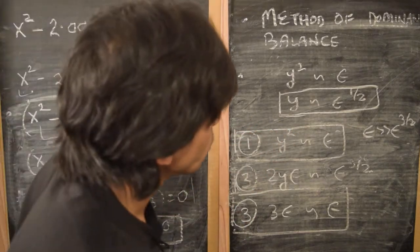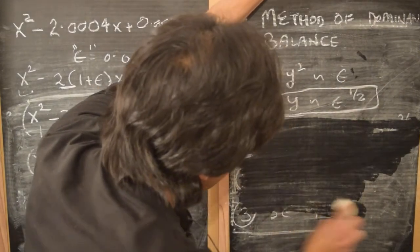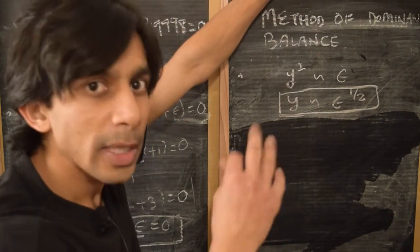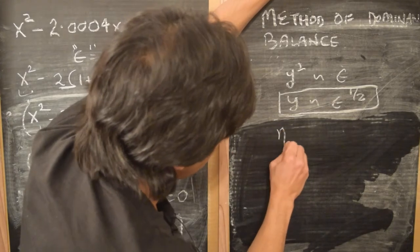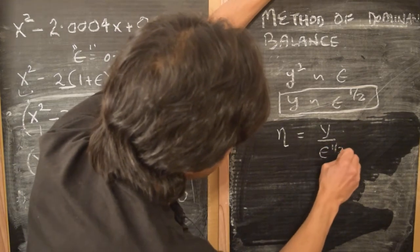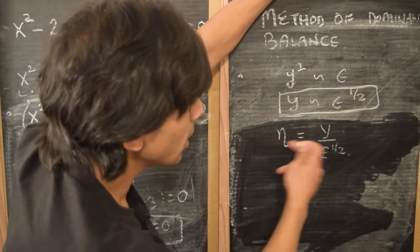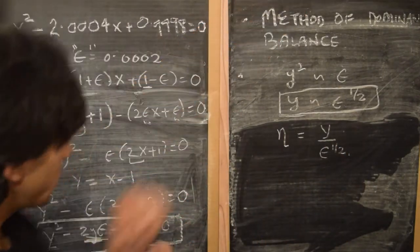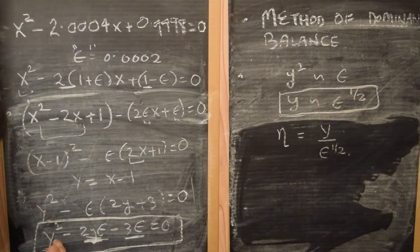Given that y scales as ε to the power of one-half, we now define a new variable which is big-O one — order one — which we can define as η, where η is y divided by ε to the power of one-half. Let's recast this equation in terms of the variable η and see what we get. If we substitute for η here...